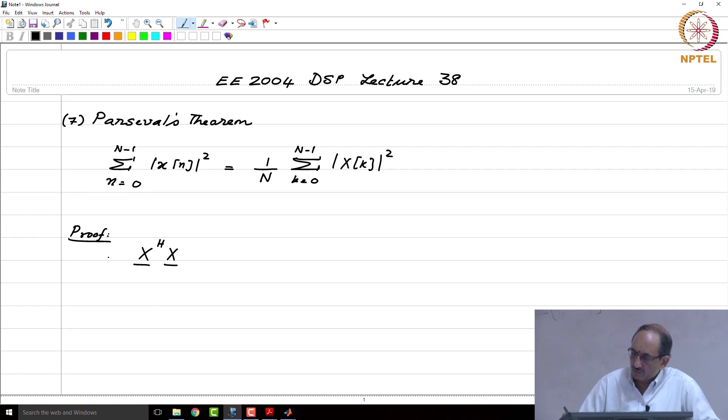If you consider 1 over n x Hermitian x, this after all is the inner product on the right hand side and this is nothing but 1 over n, cap x after all is the DFT matrix times the data vector.